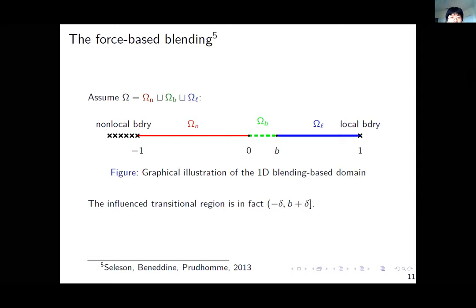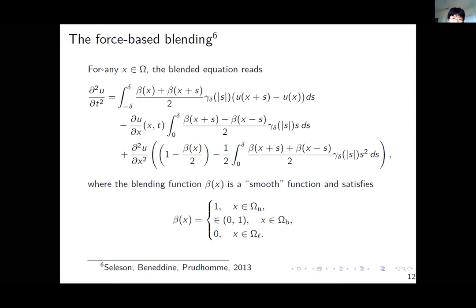We also study the dispersion relation of the force-based blending. In the 1D blending domain, we again have a non-local region and a local region. The blending region is from zero to b, and the transitional region is slightly larger, from negative horizon to b plus the horizon. The force-based blending formulation is given by an expression involving a smooth blending function beta, which equals 1 in the fully non-local region, 0 in the local region, and between 0 and 1 in the blending region.